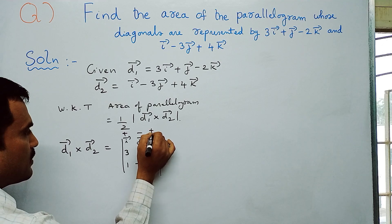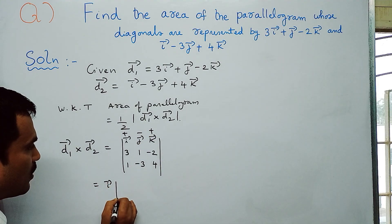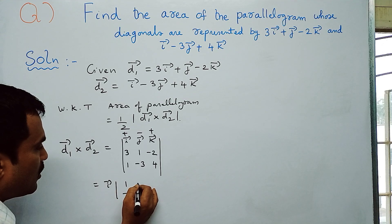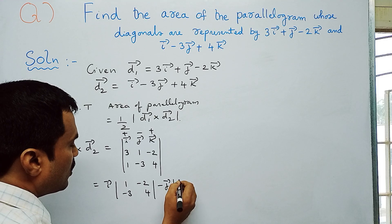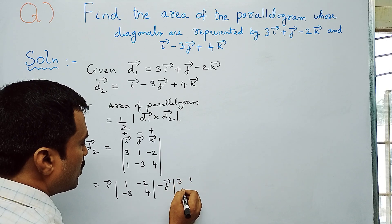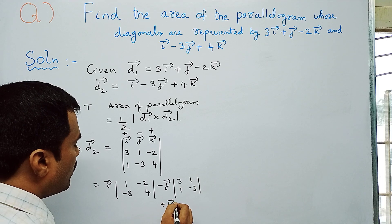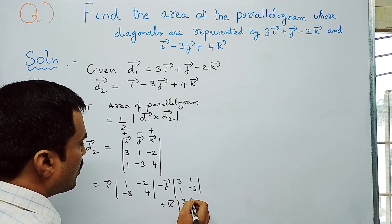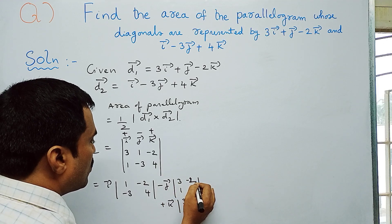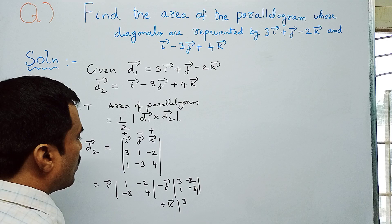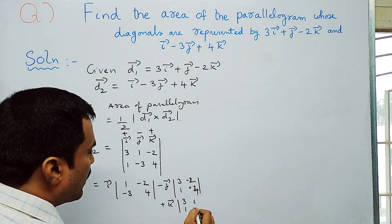Expanding the determinant: i̅ times the 2×2 minor [1, −2; −3, 4], minus j̅ times the minor [3, −2; 1, 4], plus k̅ times the minor [3, 1; 1, −3].